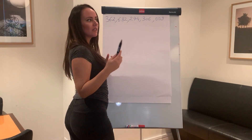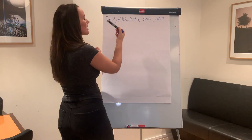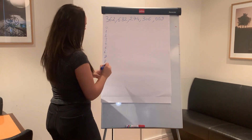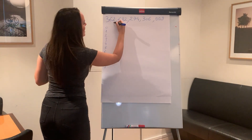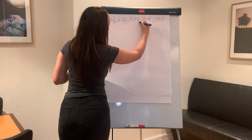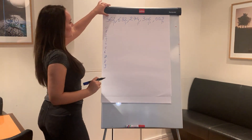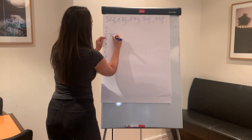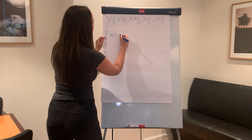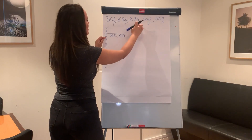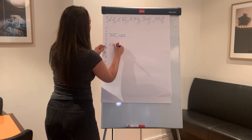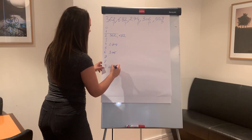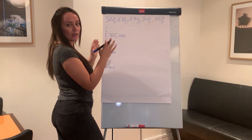Remember, we start with the least significant digit. We take the array from the previous example and look at the last digit of every number. 362 goes into index 2, 682 also goes into index 2, 274 goes into index 4, 306 goes into index 6, and 009 goes into index 9.